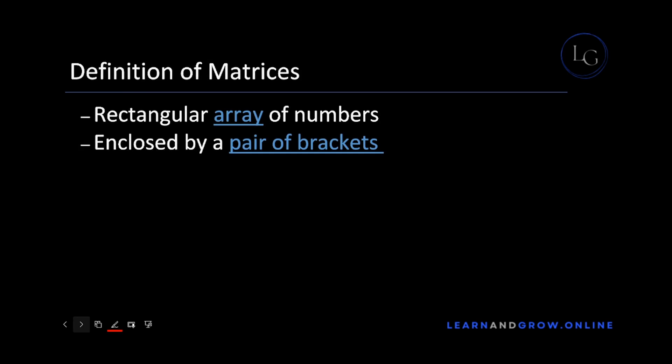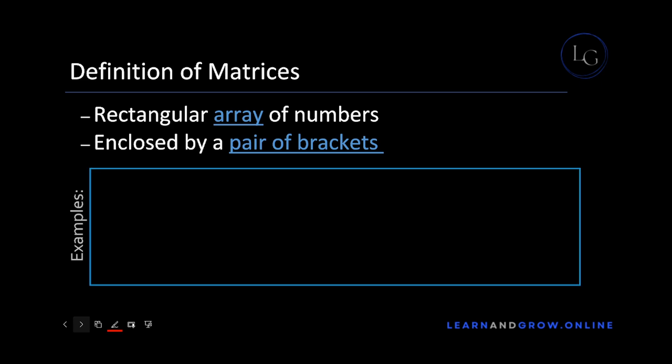First let's discuss the definition of matrices. Matrices are rectangular array of numbers that are enclosed by a pair of brackets. Now let's discuss some examples.